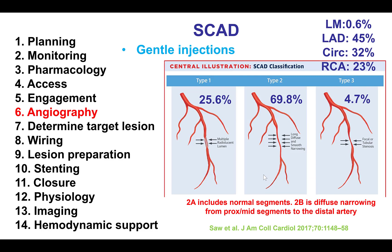Coronary angiography is critical for the diagnosis of spontaneous coronary artery dissection. The classic appearance of multiple radiolucent lumens, which is SCAD type 1, is actually present in the minority of cases, about 25%. The most common presentation is that of a long, diffuse, smooth narrowing — this is the type 2 SCAD — that can be subdivided into type 2A, which has some normal segments, and type 2B, which is diffuse narrowing that goes all the way to the distal segment of the coronary artery.